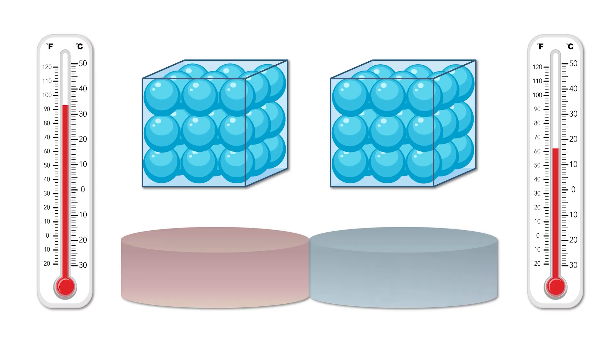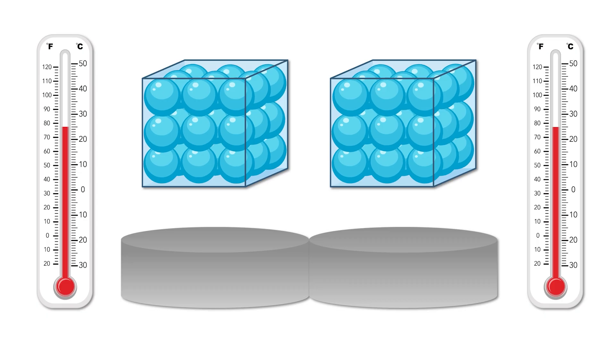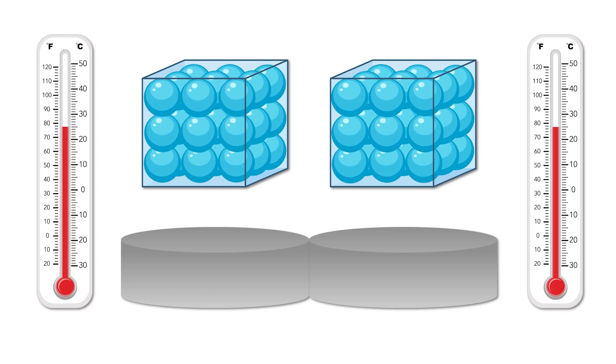During each collision, the faster particles lose a little energy, and the slower particles gain a little energy. This means the hotter object starts to cool down, while the cooler object warms up. This continues to occur until both objects reach the same temperature.